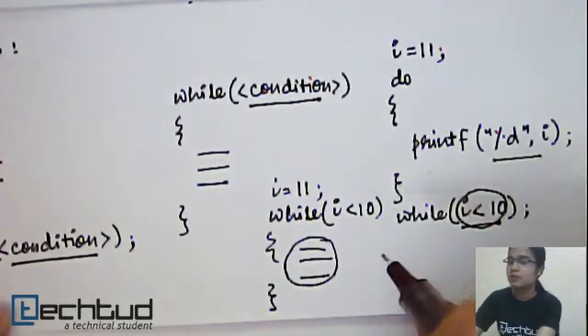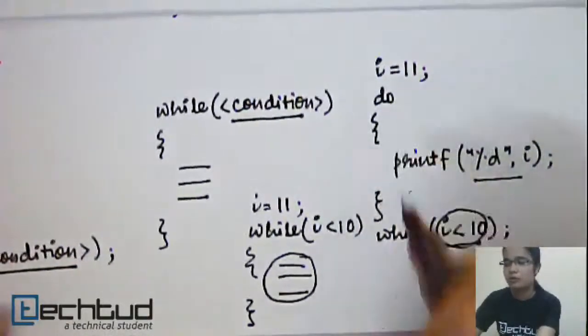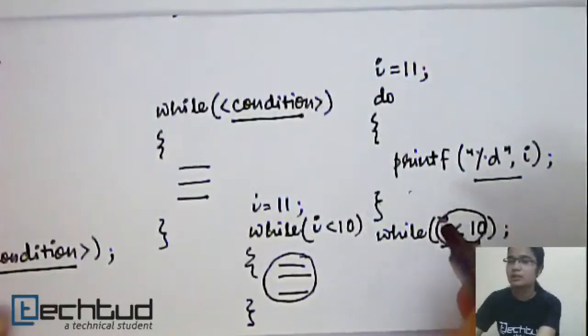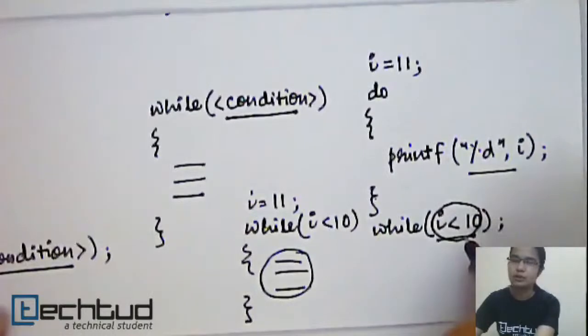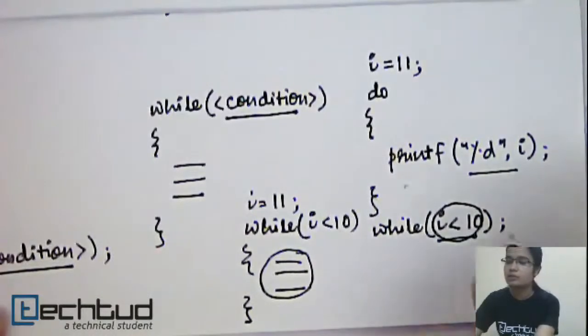Even for for loop, it is true that for every iteration, before the start of the iteration, it checks for the condition. But for do-while loop, for the first iteration it does not check for the condition. From the second iteration onwards it will check for the condition.